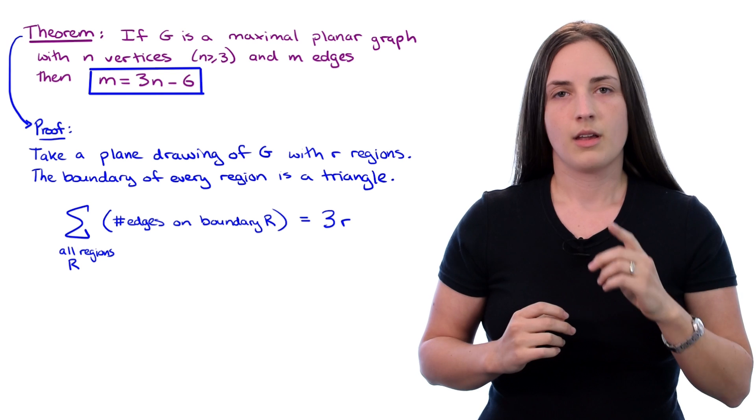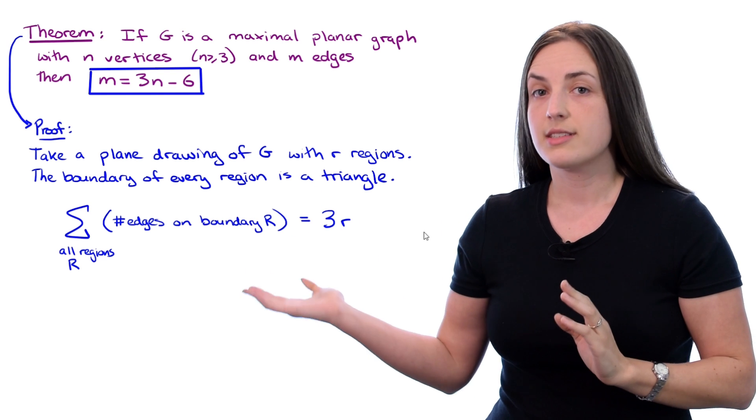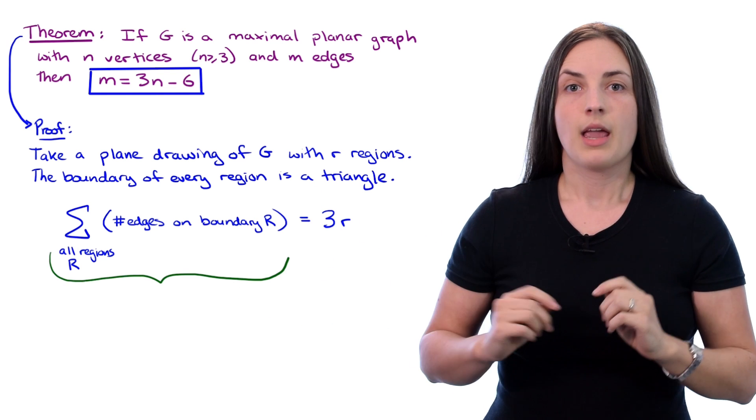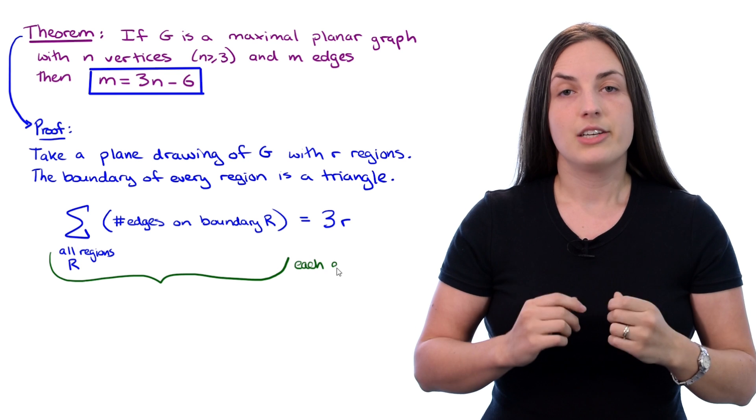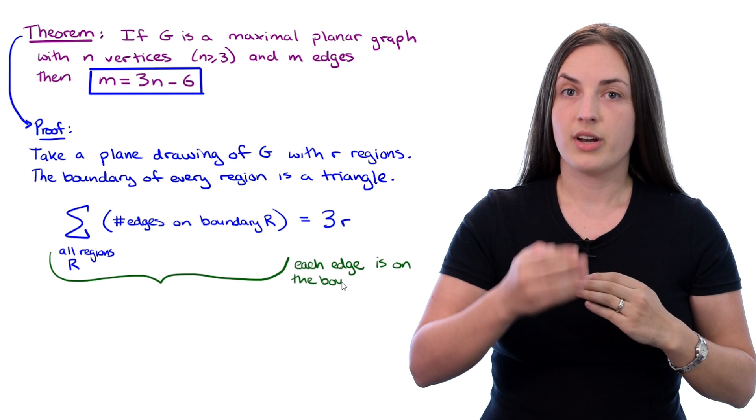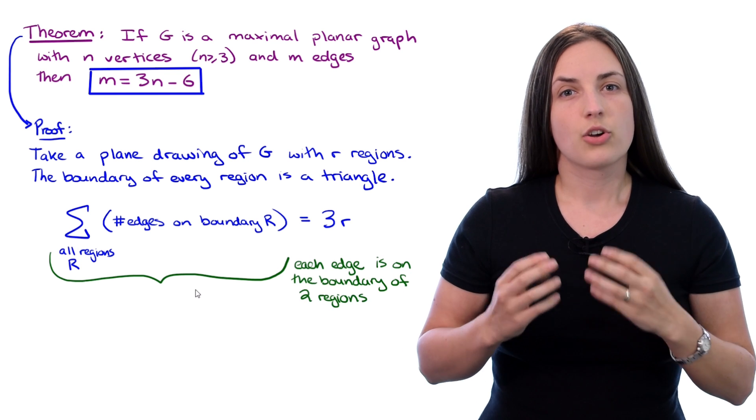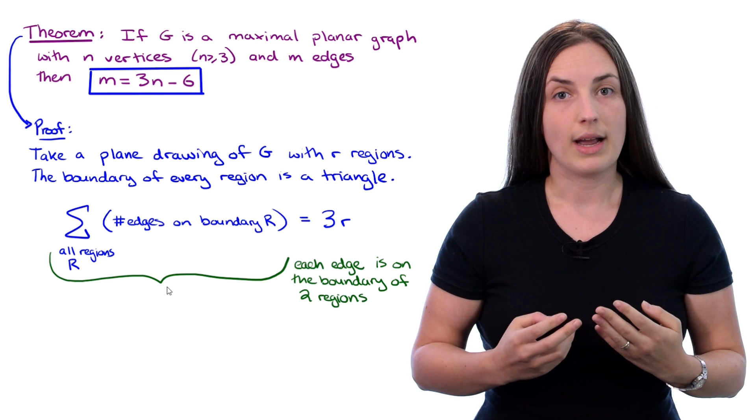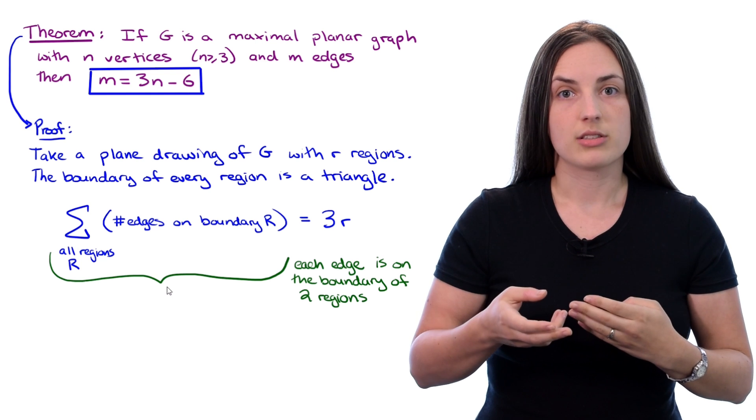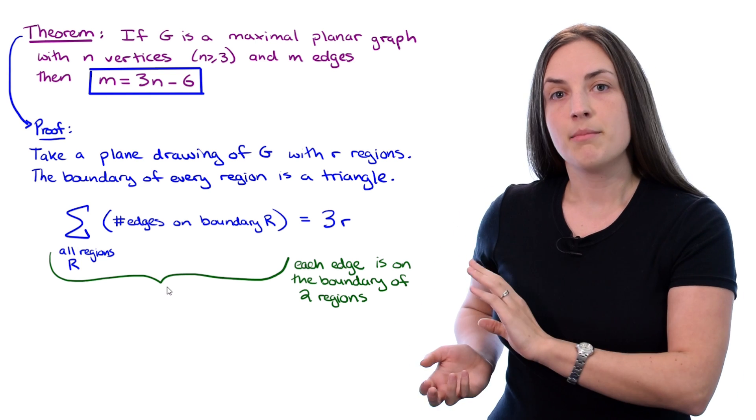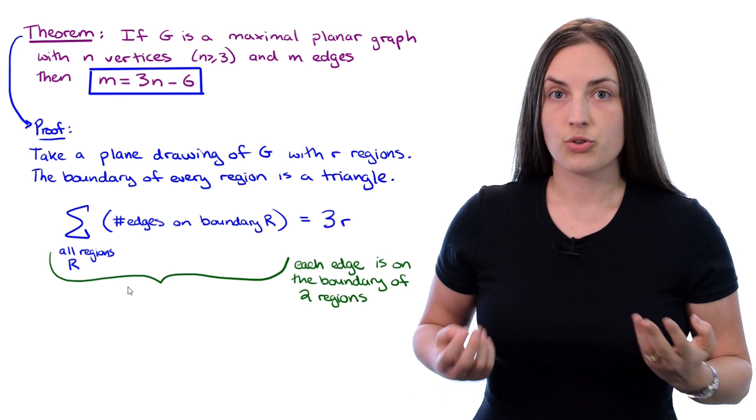Pretty straightforward. But now, think about the sum on the left-hand side, and notice that each edge belongs to the boundary of two regions. So in that sum, each edge gets counted twice, once for each of those regions. That means that the sum just counts all of the edges twice.